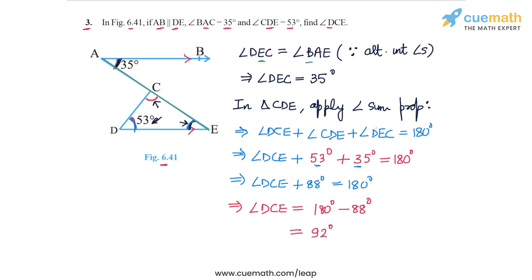So the measure of angle DCE is 92 degrees, and this is the answer to question number 3.